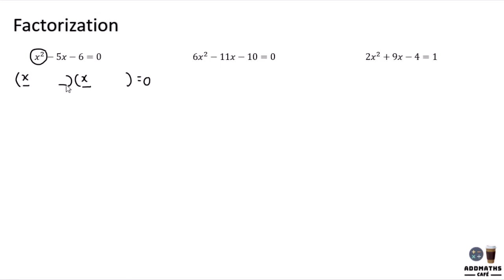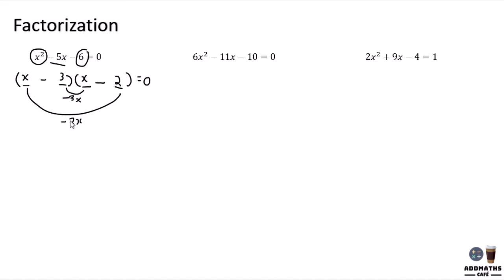To put the two values in, we look at the constant value. To get 6, we can use 3 times 2 or 6 times 1. Let's try 3 times 2. This gives us 3x from one term and 2x from the other. To get negative 5x, we put a negative on both, so negative 3x minus 2x gives negative 5x.